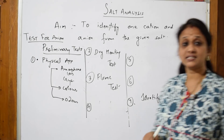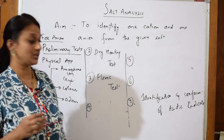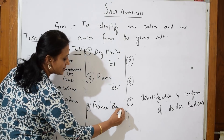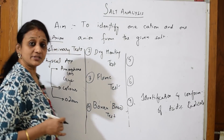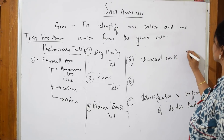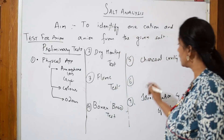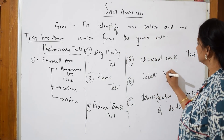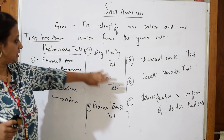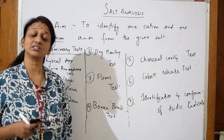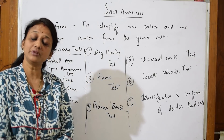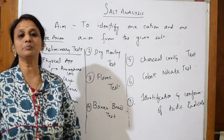After flame test, one more very interesting test is the borax bead test — I'll be explaining what it is. Some schools also do the charcoal cavity test, which I'll discuss as well. After the charcoal cavity test, the next test is the cobalt nitrate test. All of these — steps one through five — are preliminary tests. After the preliminary tests, we go to the acidic radical identification. Let's start with the first one and see what ions respond and what colors appear.